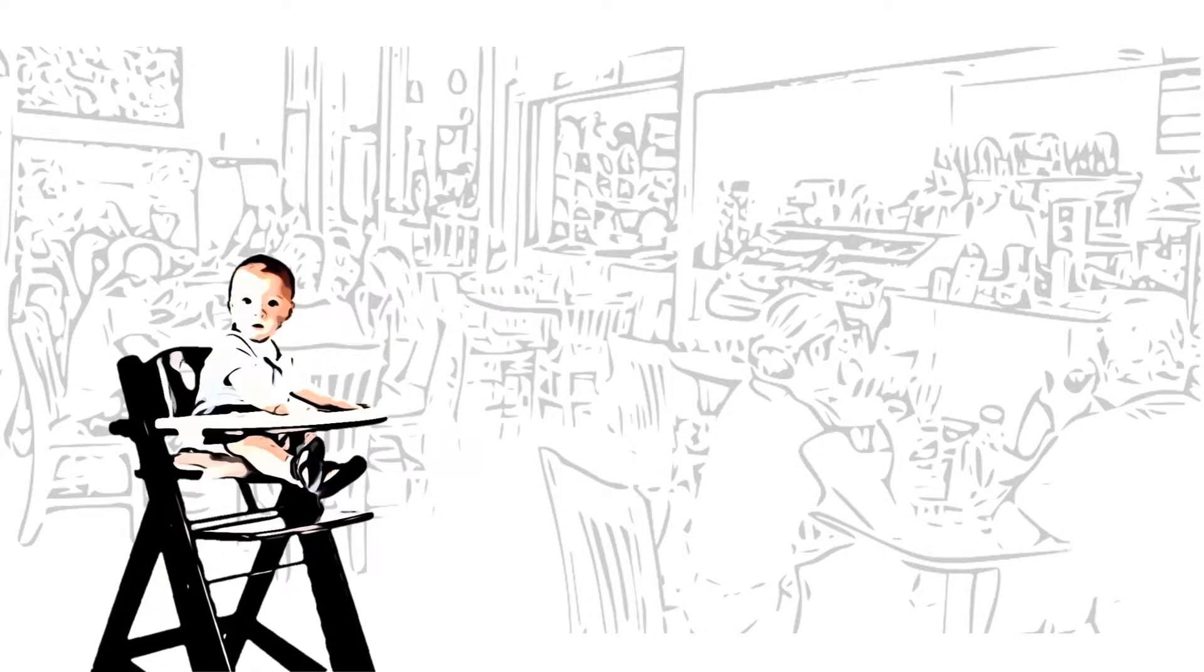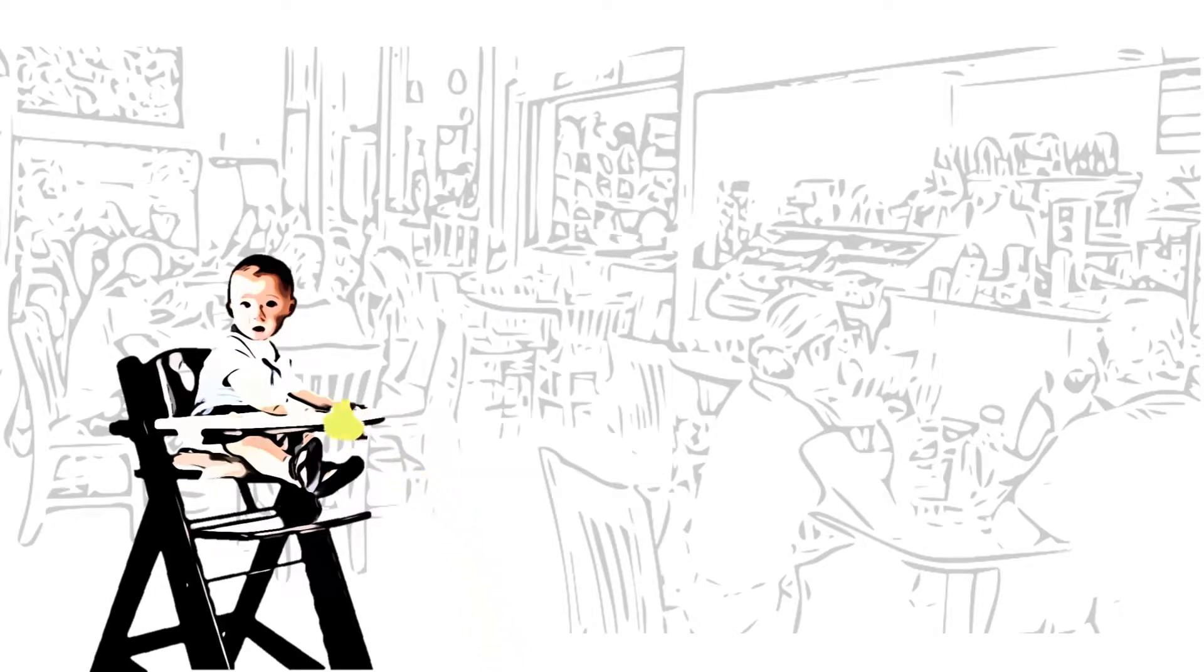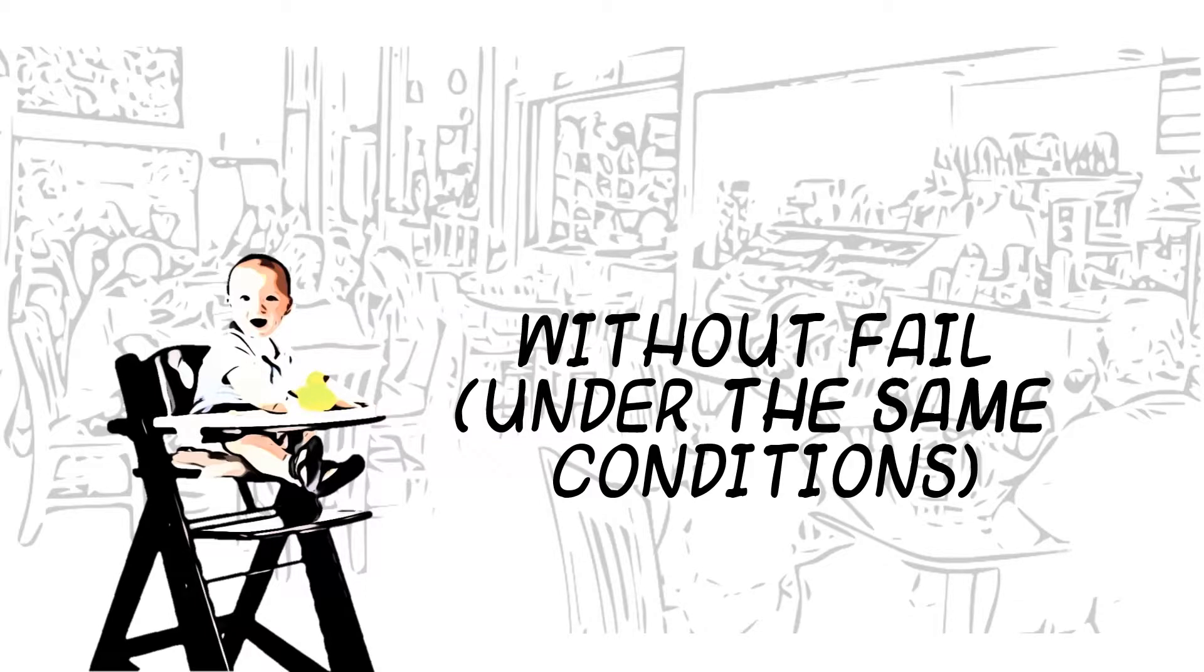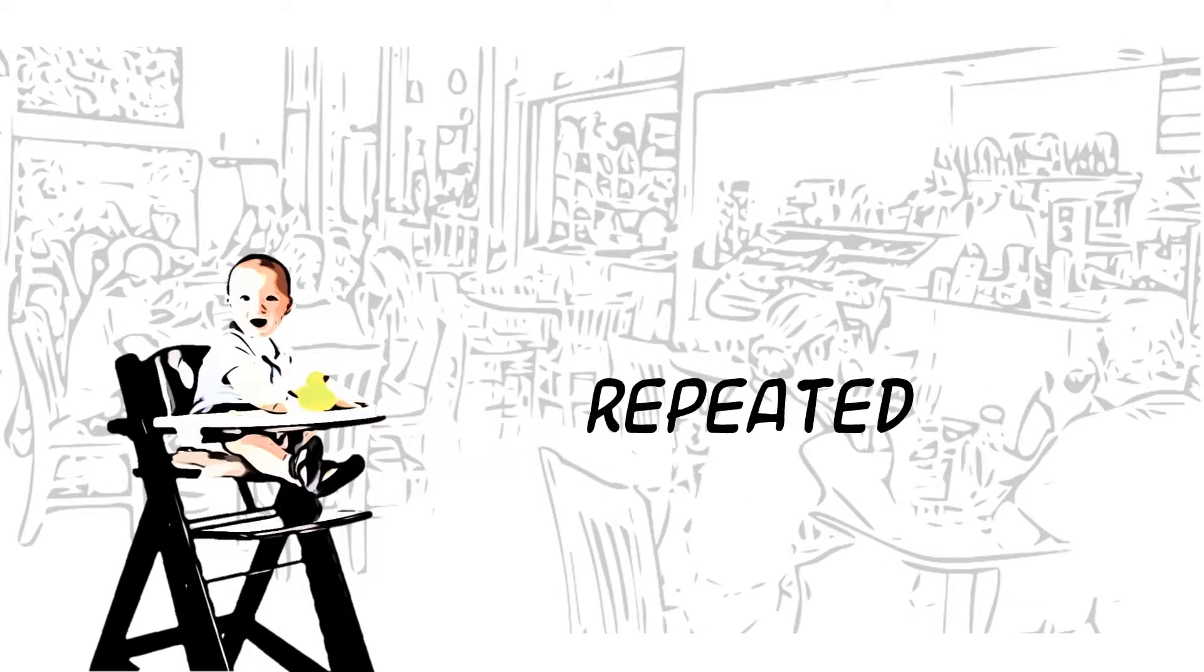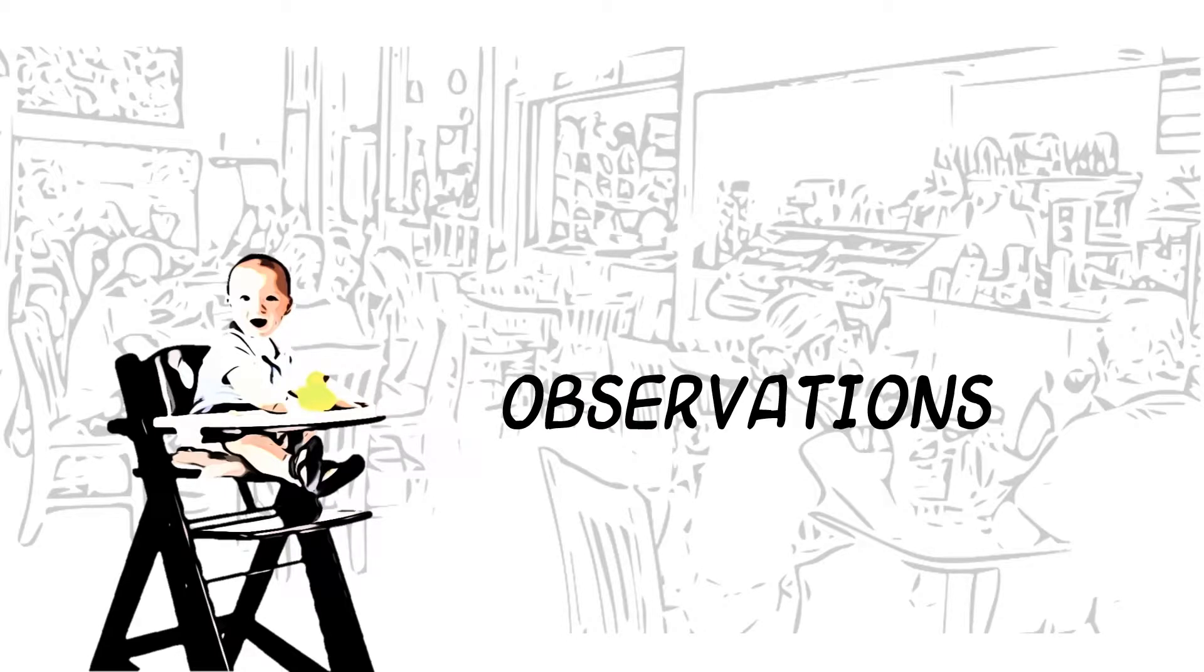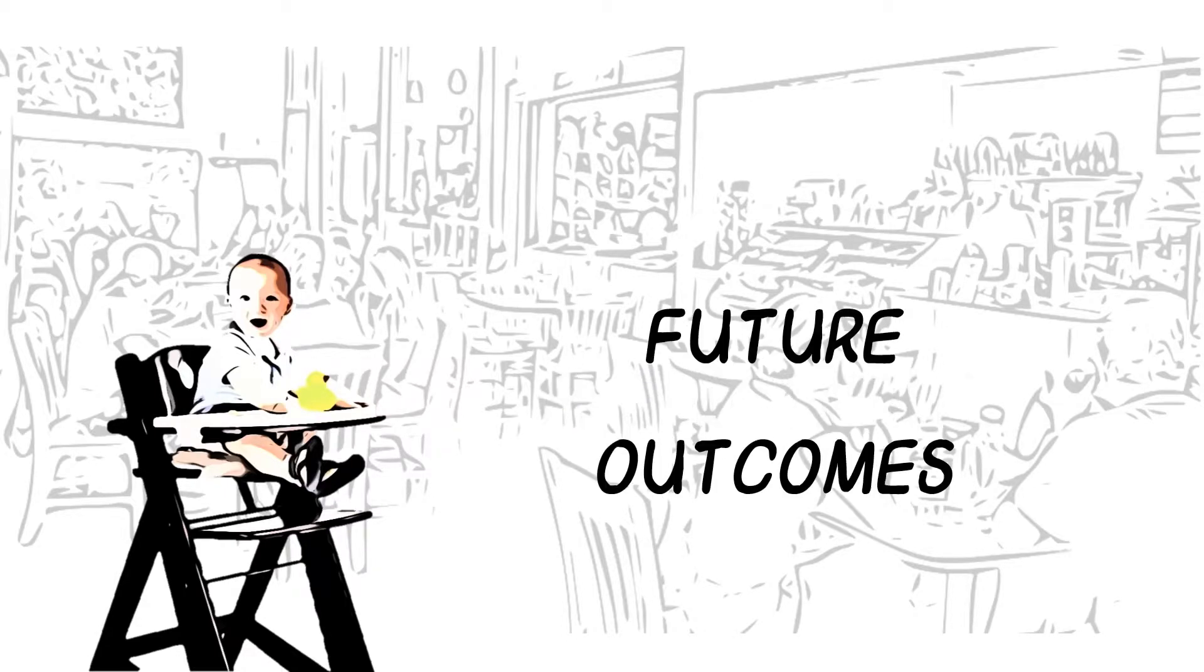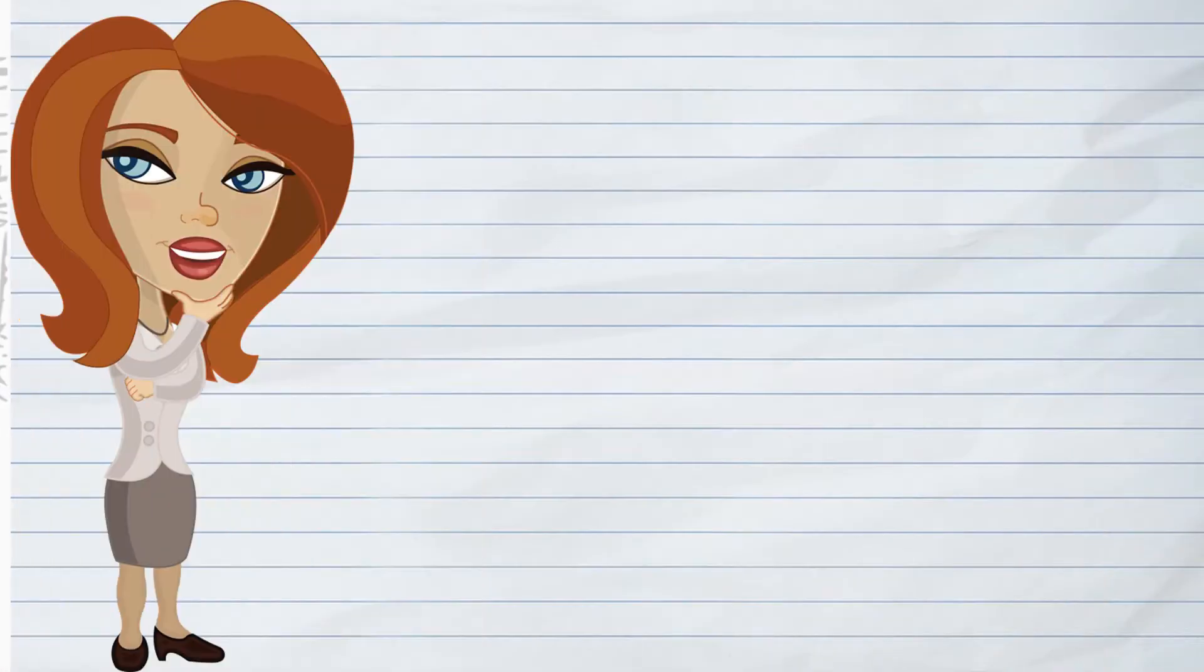Mom quickly picks it back up and places it back on the tray. The little boy throws the toy again, and without fail, the toy falls to the ground and the game is repeated. As the child is playing this game, he is making observations that will lead him to predictable outcomes about other objects in the future.